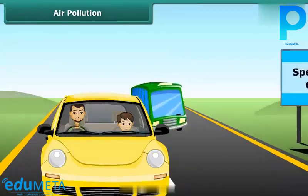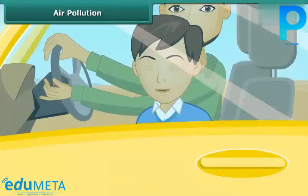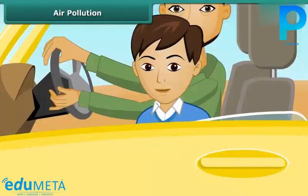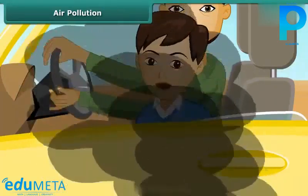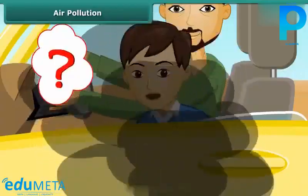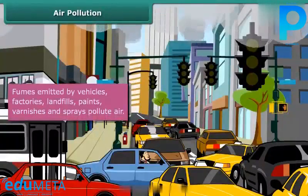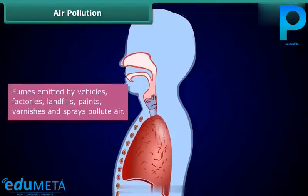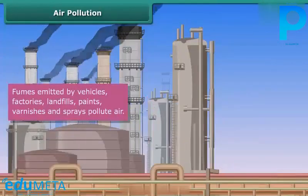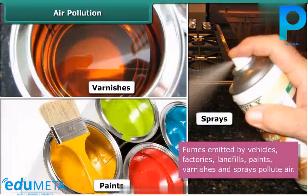Sam is on his way to the National Science Center. He rolls down the window of his car to enjoy the fine weather outside. A bus emitting black fumes passes by and he starts coughing. The fumes emitted by vehicles pollute air, and when inhaled, they irritate the windpipe and the lungs. Air is also polluted by harmful chemicals emitted by factories. Paints, varnishes, and sprays contain chemicals that pollute air. Landfills where waste is deposited emit harmful gases that also pollute air.